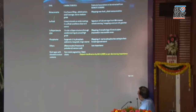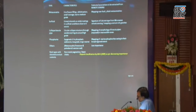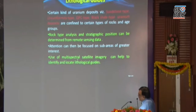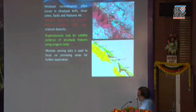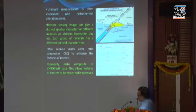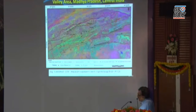A few other deposit types, although very small, play an important role in our resources — the surficial type and the phosphorite type of deposits — because they come as byproducts from other mined materials. So broadly, the lithological guides, the structural guides where satellite data plays an important role, and the alteration zones — basically the clay horizons and iron alterations — are the key products we derive. These are some of the products which have been generated.